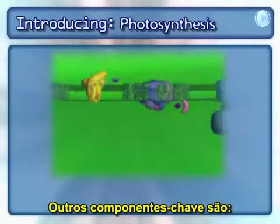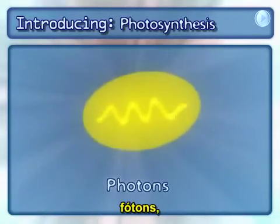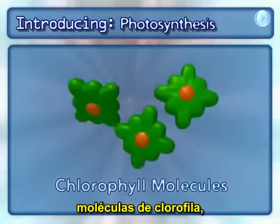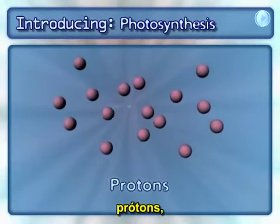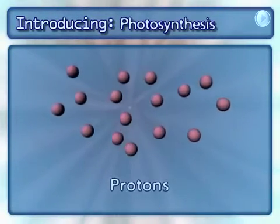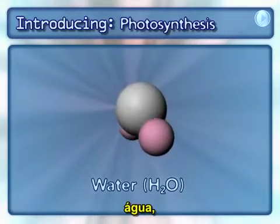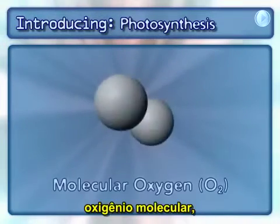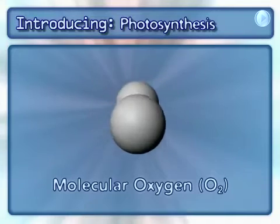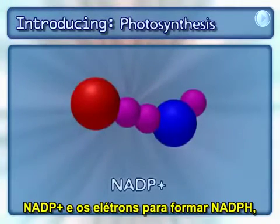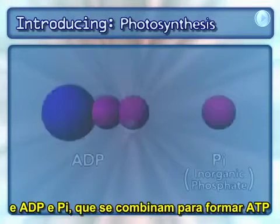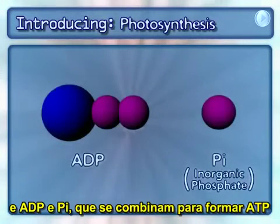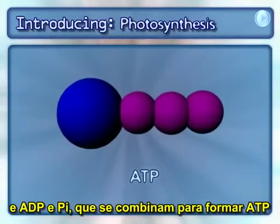Other key components include photons, chlorophyll molecules, protons, water, molecular oxygen, NADP and the electrons to form NADPH, and ADP and PI, which combine to form ATP.